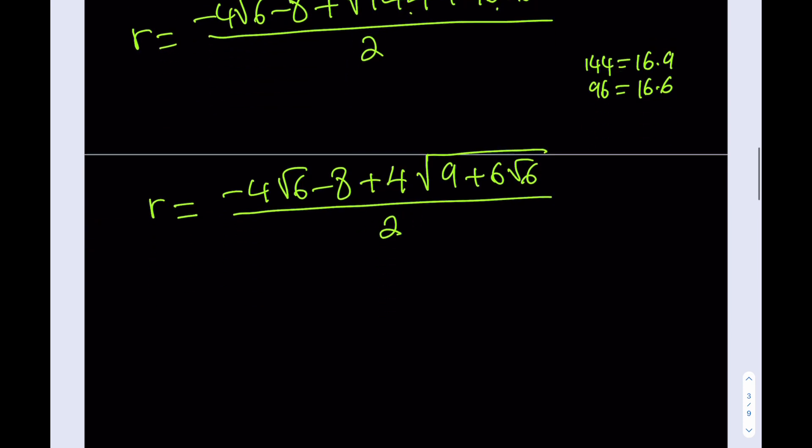We're almost there. Now what I'm going to do is I'm going to divide everything by 2. That's going to be smooth. And I want to write this radical first because I kind of like that. 2√(9 + 6√6) - 4√6 divided by 2, of course. Let's not forget that. And that's going to be -2√6 - 4. All right? So basically that's going to be my answer, the radius of the blue circle that I've been looking for.